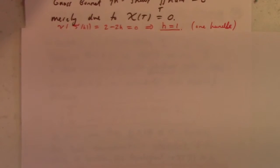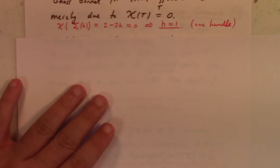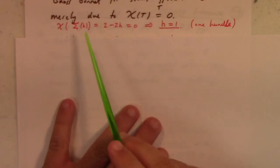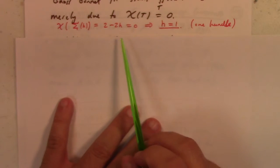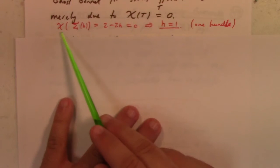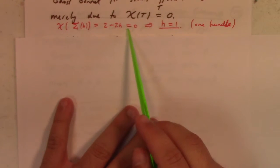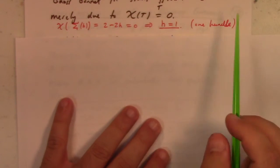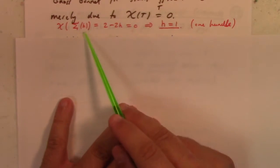A torus is another way to think of it as a sphere with one handle added to it. The Euler characteristic of a sphere with h handles is 2 minus 2h, which is consistent with the torus having Euler characteristic zero.